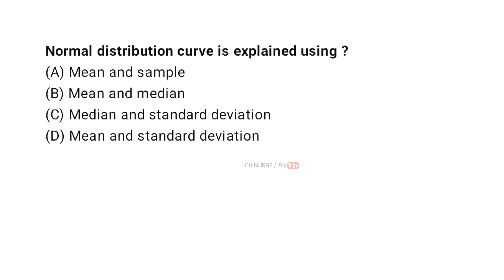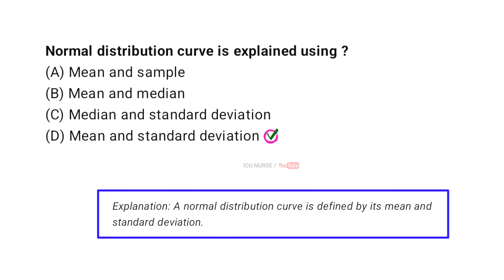A normal distribution curve is explained using: A: mean and sample, B: mean and median, C: median and standard deviation, D: mean and standard deviation. The correct answer is D: a normal distribution curve is defined by its mean and standard deviation.